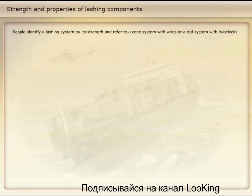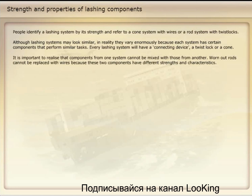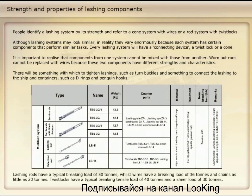People identify a lashing system by its strength and refer to a cone system with wires or a rod system with twist locks. Although lashing systems may look similar, in reality they vary enormously because each system has certain components that perform similar tasks. Every lashing system will have a connecting device — a twist lock or a cone. It is important to realize that components from one system cannot be mixed with those from another. Worn-out rods cannot be replaced with wires because these two components have different strengths and characteristics. Lashing rods have a typical breaking load of 50 tonnes, whilst wires have a breaking load of 36 tonnes and chains as little as 20 tonnes.